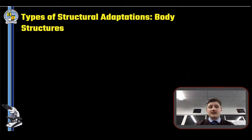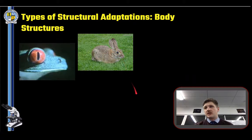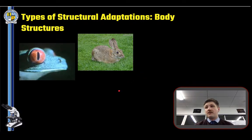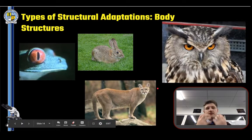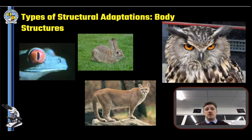Eyes are fascinating. Prey animals — things that get hunted — often have their eyes on the sides of their heads, allowing much greater vision around their bodies so they can see predators early and get a head start. Predators, like us, have their eyes at the front of their bodies so they can see prey and judge distances when hunting. Tree-dwelling organisms also often have front-facing eyes for greater depth perception when swinging through trees.